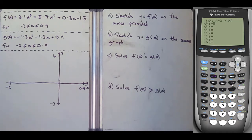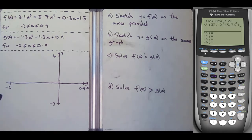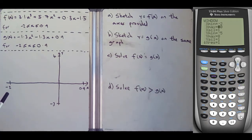We go to y equals and put the first function in: 3.1x cubed plus 5.7x squared plus 0.3x minus 1.5. Press enter, then go straight to the window — x min is minus 2, x max is 0.9. Skip the x scale, go to y min minus 3 and y max is 4. Press enter and graph.